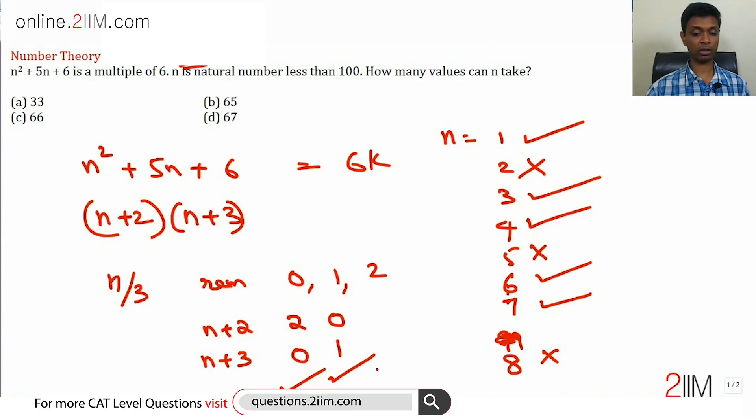If n leaves a remainder of 2, n+2 will leave a remainder 1, n+3 will leave a remainder 2. This will not be a multiple. Very simple, which is why every set of three numbers, two works and one does not work.